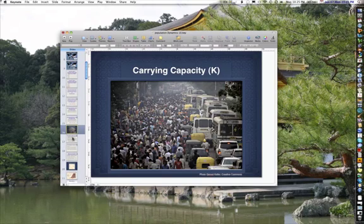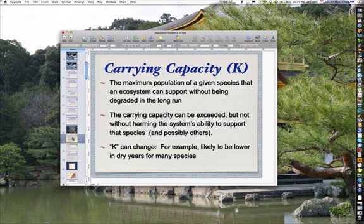Carrying capacity with respect to humans. Carrying capacity is the maximum population of a given species that an ecosystem can support without being degraded in the long run.